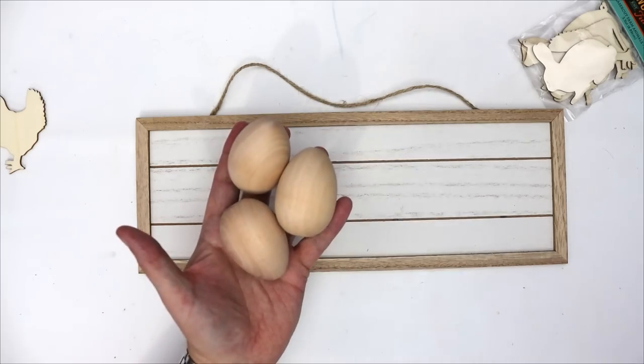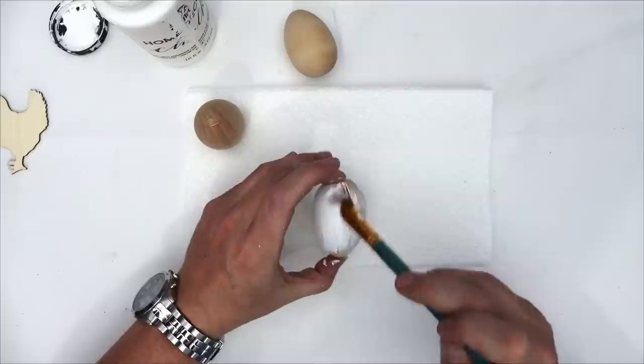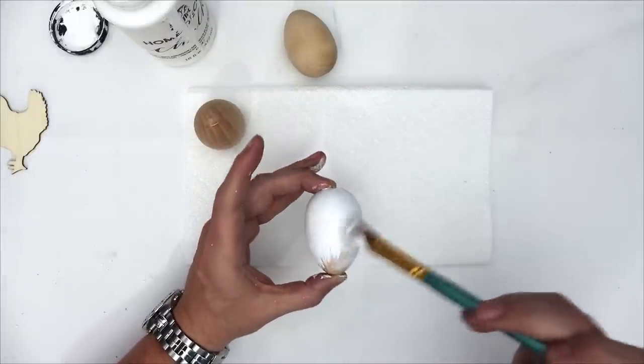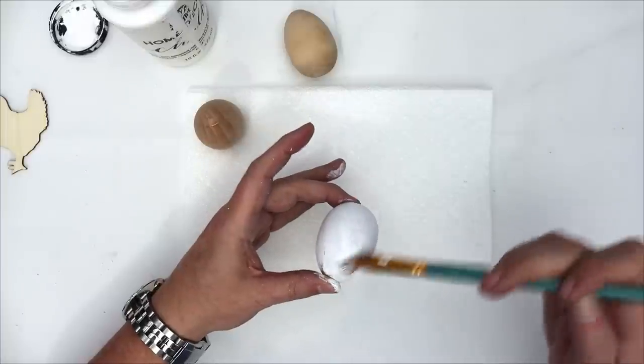And the first thing we're going to do is get our eggs painted. By the way, eggs are not the easiest thing to paint. They roll around quite a bit, so be prepared to get a little messy with this.